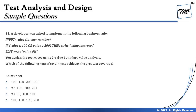Question number 21 is related to boundary value analysis, which is generally kept straightforward. It says a developer was asked to implement this business rule — input value is an integer. The program states: if value is less than or equal to 100, or value is greater than or equal to 200, then write 'value incorrect'; else write 'value is OK'. So anything between 101 and 199 is considered valid, while 100 and below and 200 and above are incorrect. Pay careful attention to the operators, as that's where you may go wrong.